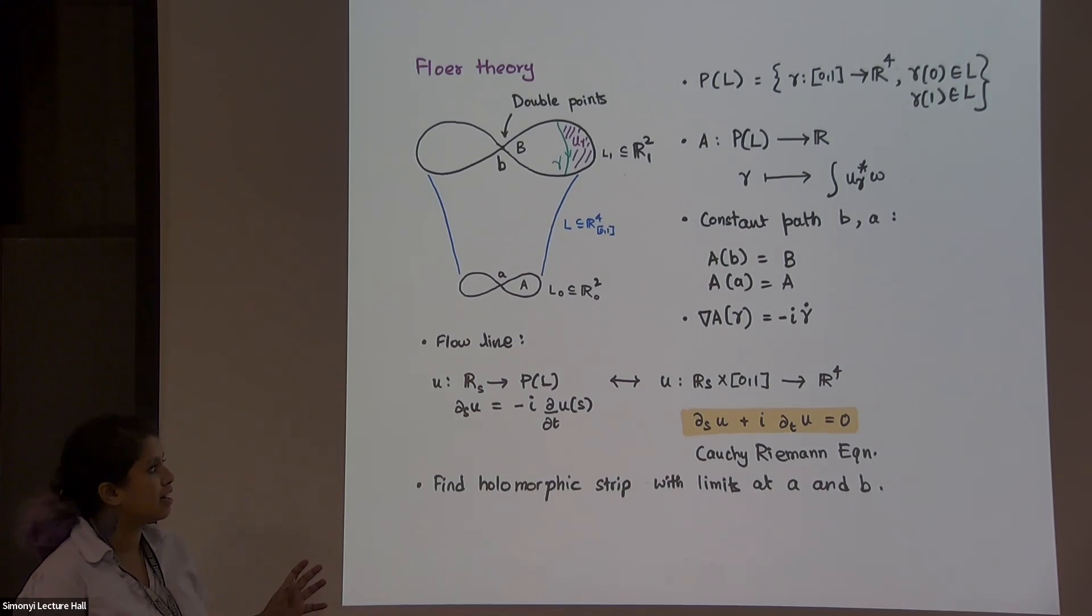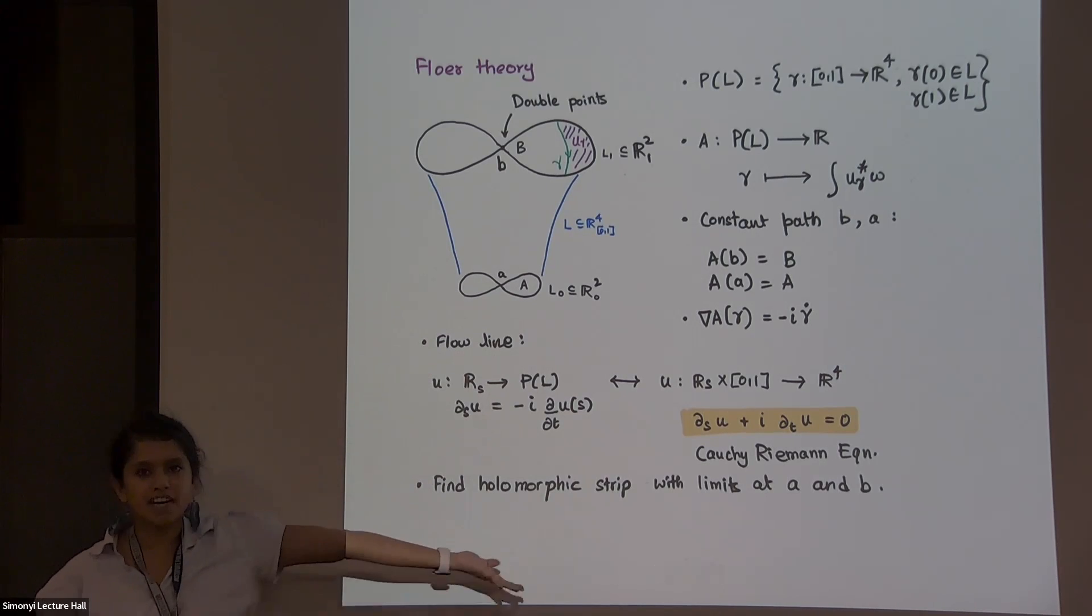So, what I'm looking for, when I'm looking for flowlines, is a holomorphic strip. From a strip, which has limits at A and B, the points that I was caring about for some time. Very good. So now, how do I find such a holomorphic strip? I haven't told you how to do that.